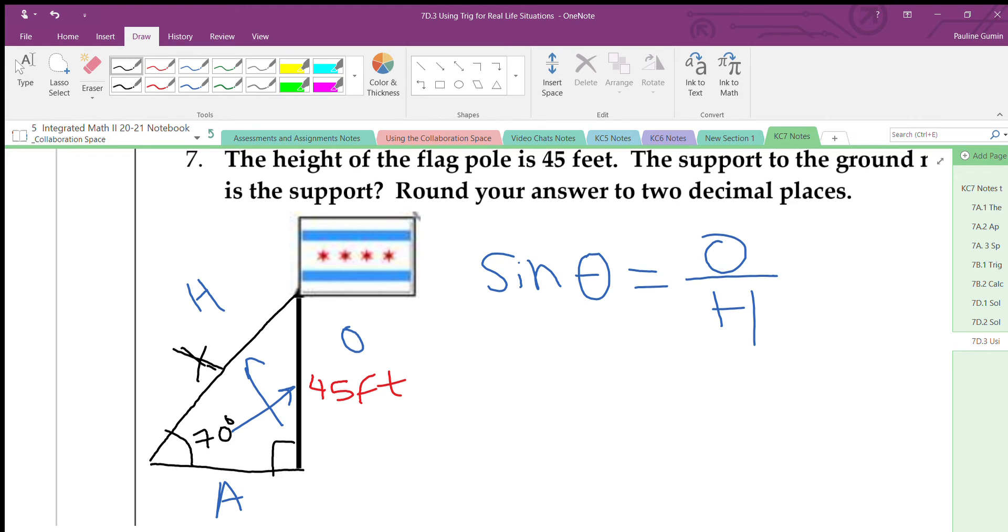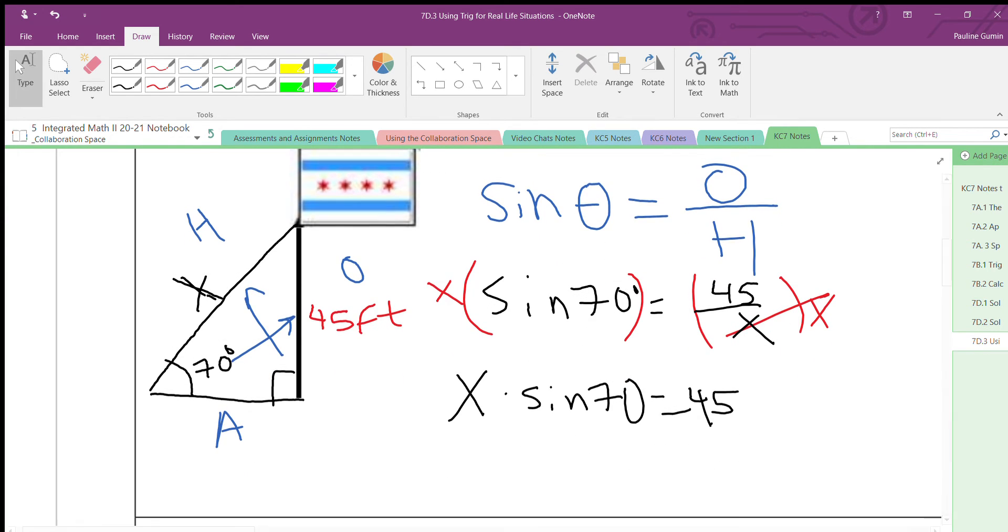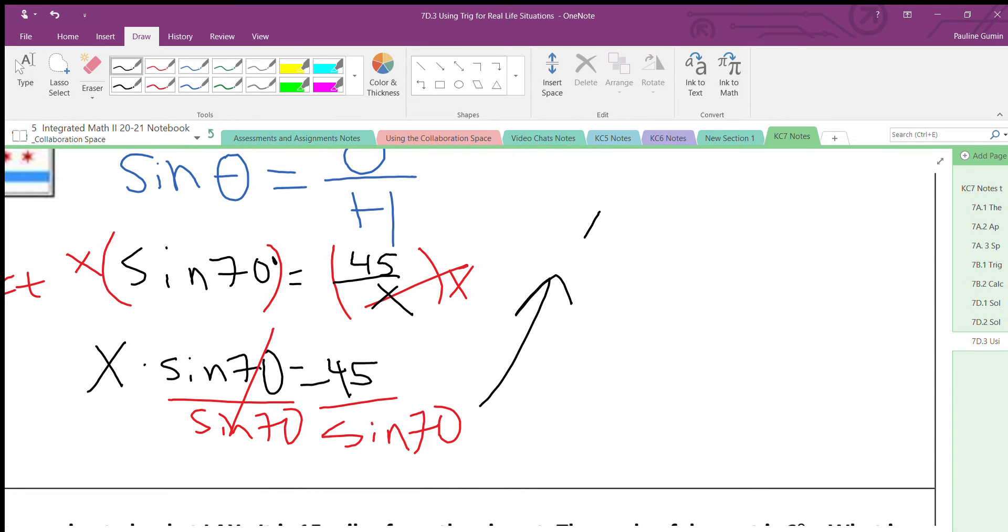Let's plug everything that we know in. Sine of 70 degrees equals 45 over x. Okay, let's solve this problem. First, I'm going to multiply both sides by x to get x out of the denominator. So I have x times sine of 70 degrees equals 45. I'm almost done with this problem. I'm going to divide both sides by sine of 70 degrees. On this side they cancel. x equals 45 divided by sine of 70. I'm going to plop that into my calculator and I get that that support is 47.89 feet.